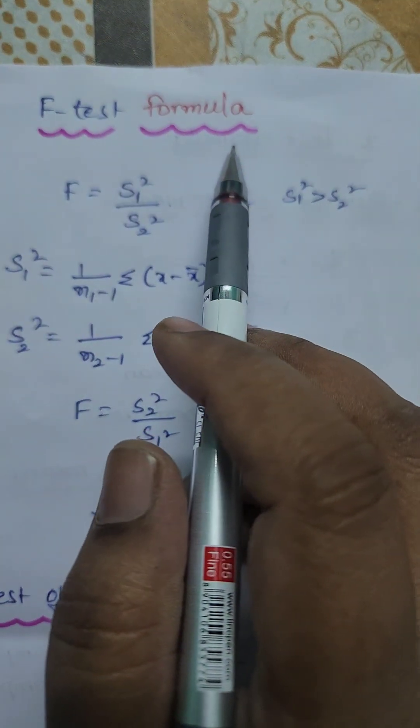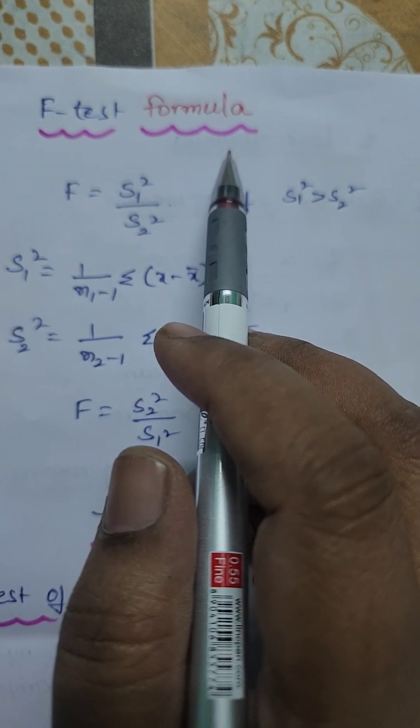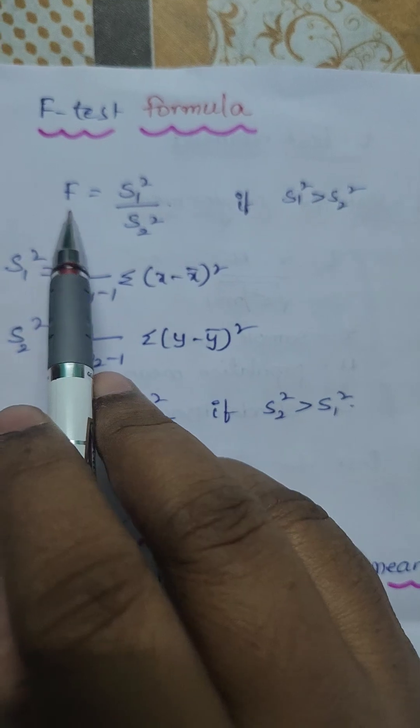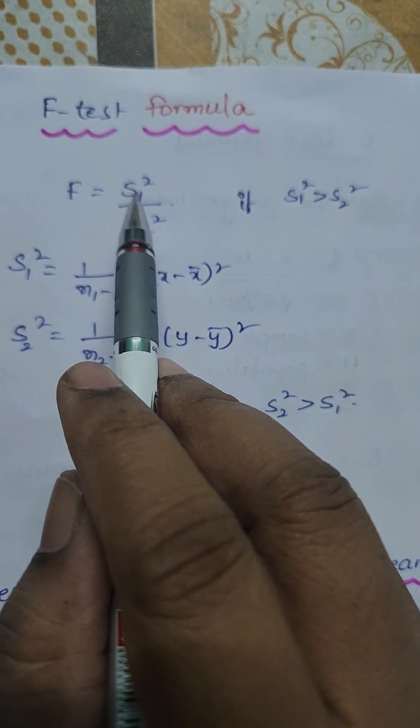F test formula in research methodology and statistics. F is equal to S1 square upon S2 square.